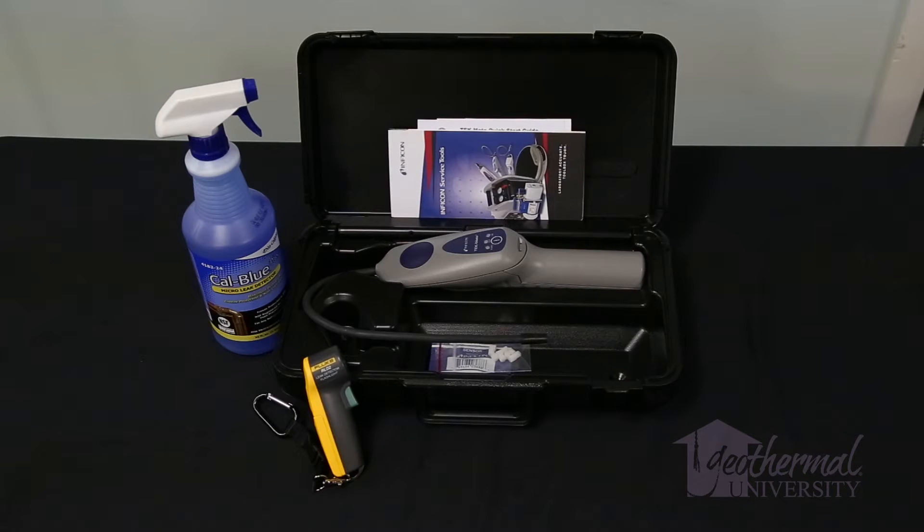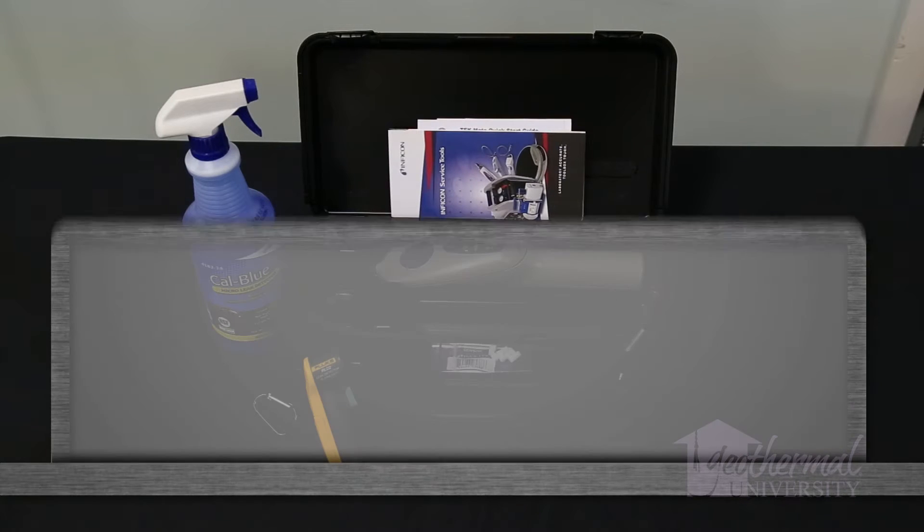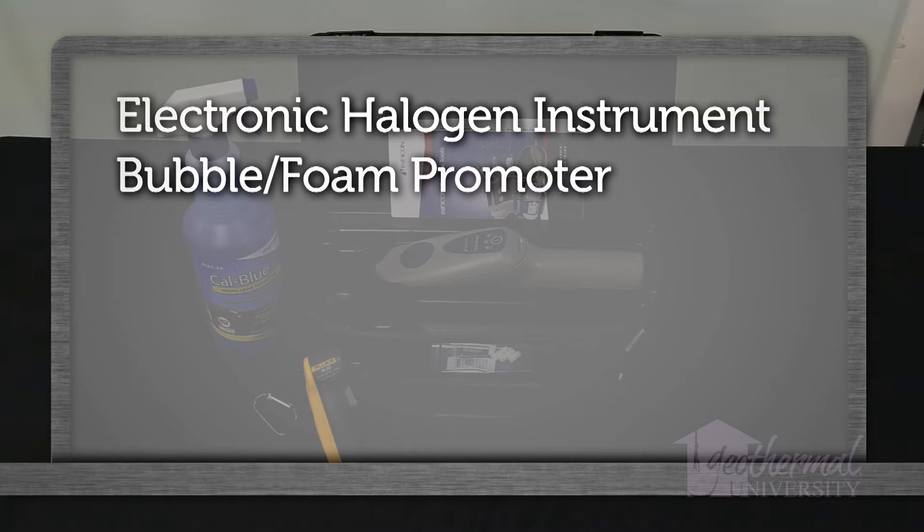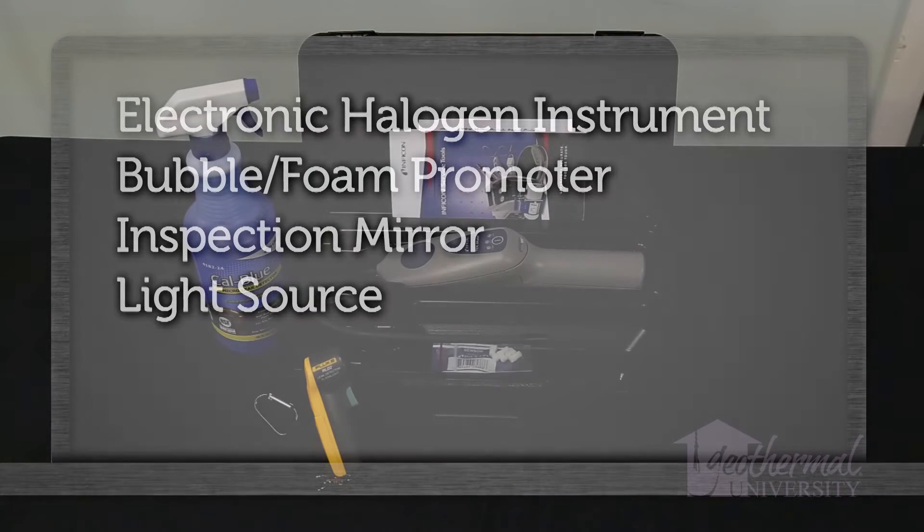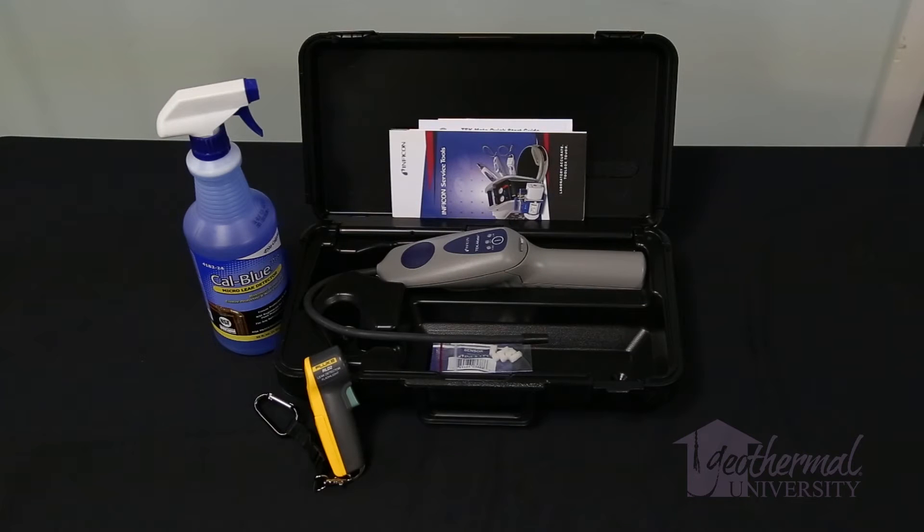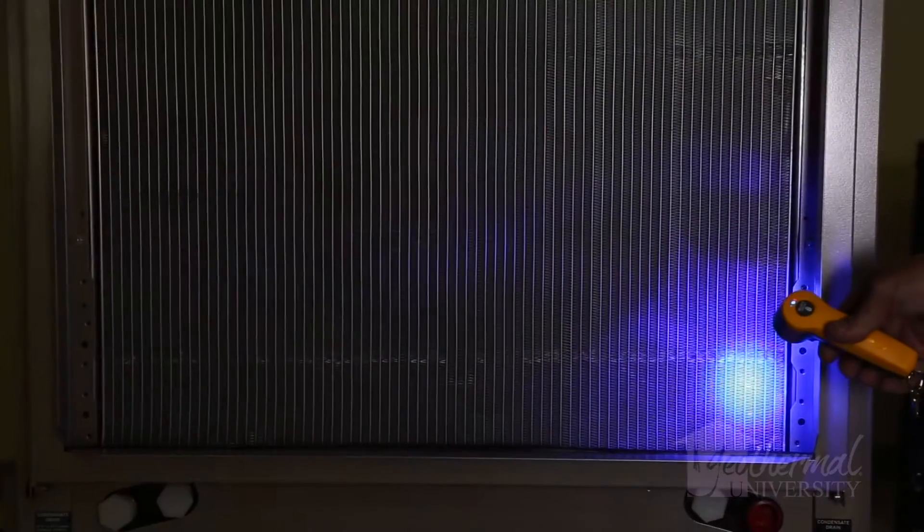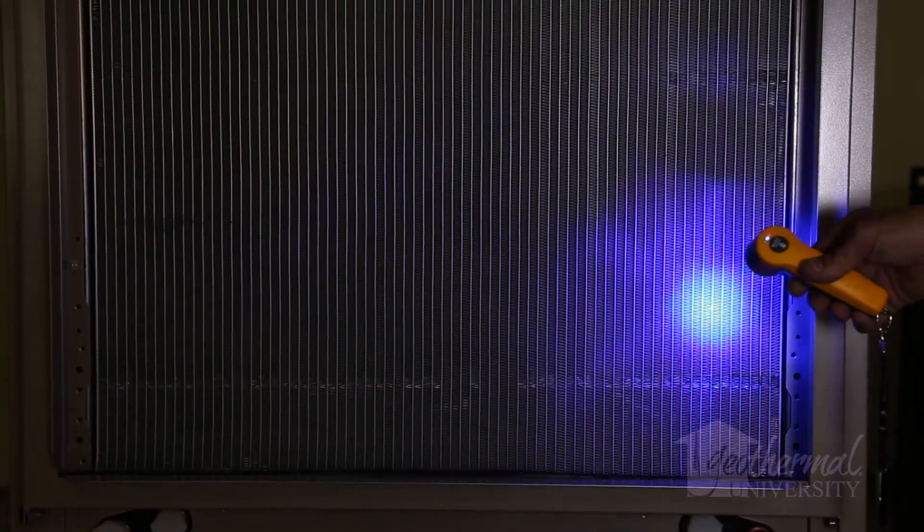Our video recommends a systematic method of search using common leak detection tools. These tools include an electronic halogen instrument having a sensitivity of at least half ounce per year, a bubble or foam promoter, an inspection mirror, and a light source. In addition to the above detection tools, many technicians use fluorescent leak detection.